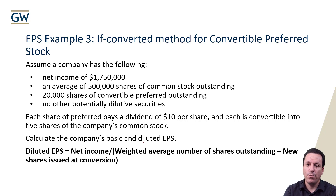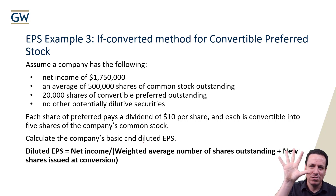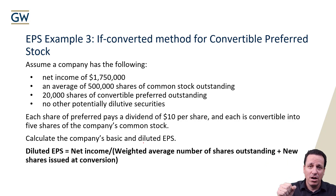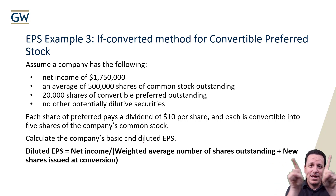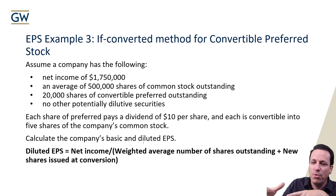Each preferred share is convertible into five shares of the company's common stock. People often miss that because the word 'five' is written out rather than as a numeral. So remember: one preferred share converts into five common shares when conversion happens. It might not want to convert if it's making more from the dividend, but when it does convert, it becomes five common shares. So convertible preferred converts into five shares of the company's common stock.